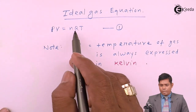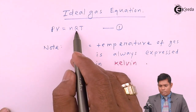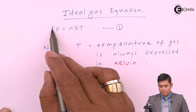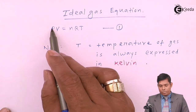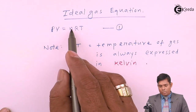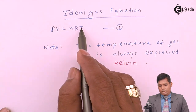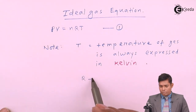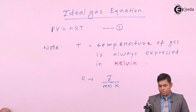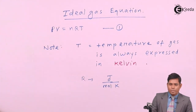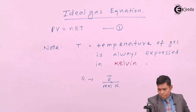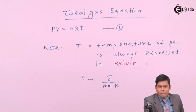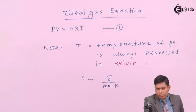The unit of R in the SI system is Joules per mole Kelvin. The value of R is approximately 8.314 Joules per mole Kelvin. This is the universal gas constant.